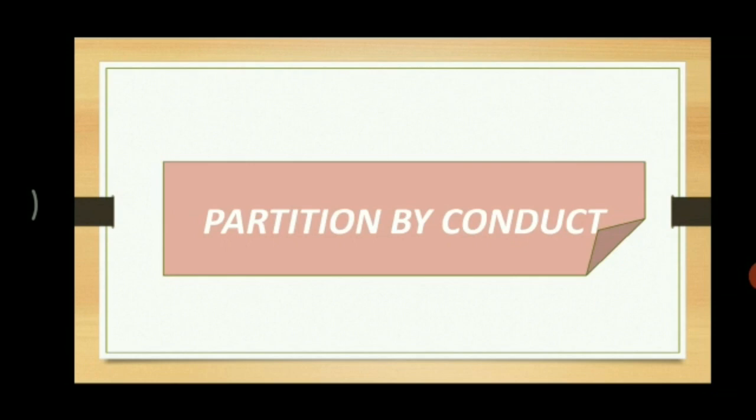And there are many circumstances which will show that we want the partition. Like food, worship separation, separate business, separate expenditure, separate income, or enjoyment of property. That means, if there is a joint family that possesses joint status, and within that a member wants to enjoy a separate status, then it clearly shows that the person demands a partition.